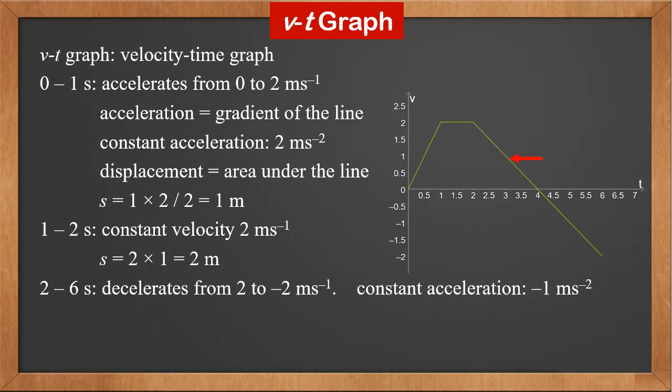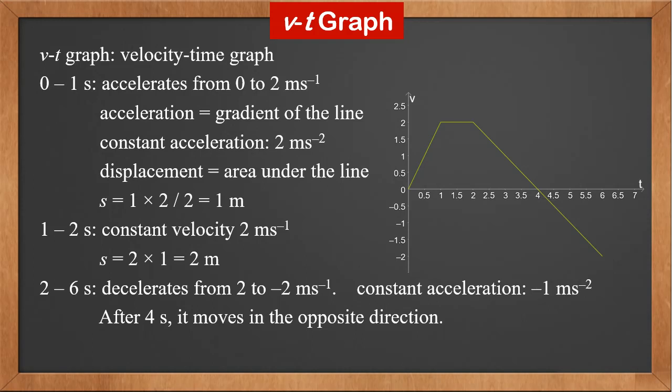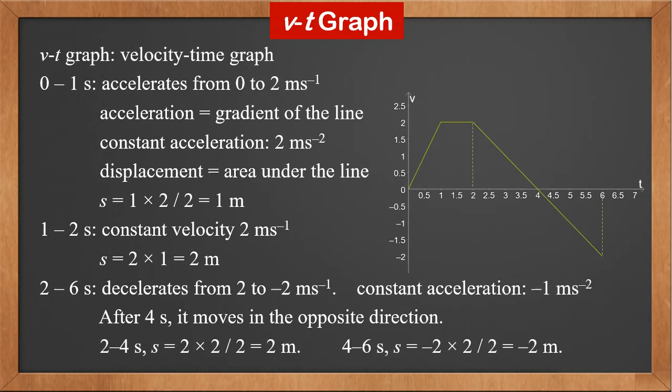From 2 to 6 seconds, the object decelerates from 2 to minus 2 meters per second. The acceleration is constant and is the gradient of the line, which is minus 1 meter per second squared. At the 4th second, the object's velocity is 0 and it comes to an instantaneous rest. After the 4th second, it starts to move in the opposite direction and the velocity is negative. The displacement from 2 to 4 seconds is the area of the triangle, which is 2 meters. From 4 to 6 seconds, the area is below the x-axis, so it is negative — minus 2 meters. Therefore, from 2 to 6 seconds, the displacement is 0. The object keeps moving in the positive direction until it comes to rest, then keeps moving in the negative direction until it comes back to the starting point.